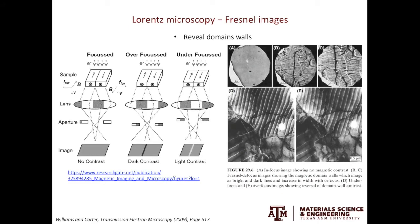Another type of image you can acquire using Lorentz microscopy is the Fresnel image. Fresnel should be our old friend now — we first learned Fresnel from Fresnel fringes. In the Fresnel imaging condition, if your image is in focus, you actually won't see too much because there's no contrast. But if you play with the defocus value, either over-focus or under-focus, the deflection of the incident electron beam is magnified by the local change of magnetic moments. Therefore, the dark and bright lines will tell you where the domain walls are. To quickly wrap up: in Foucault images, the contrast comes from each domain; in Fresnel images, the contrast comes from domain walls.